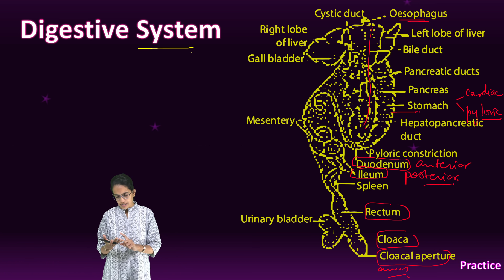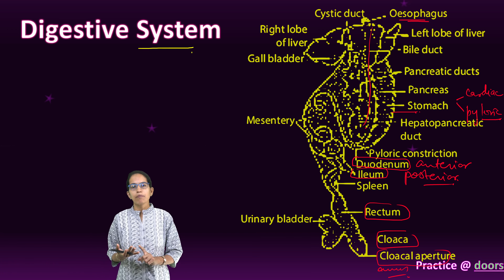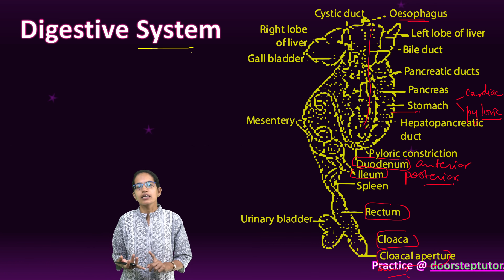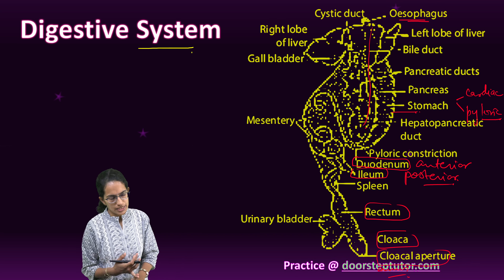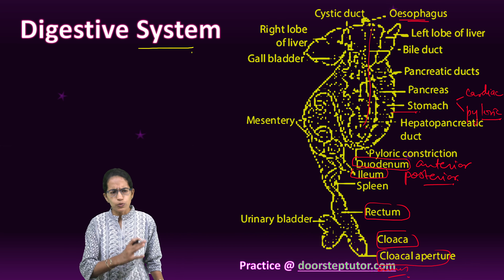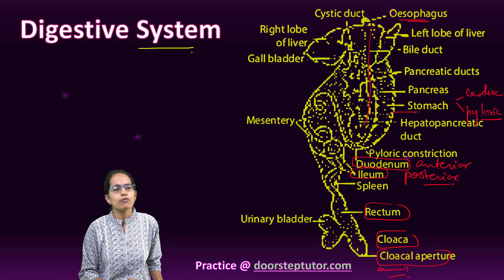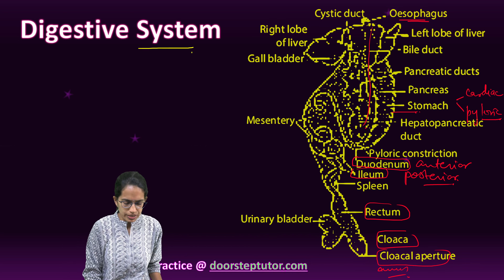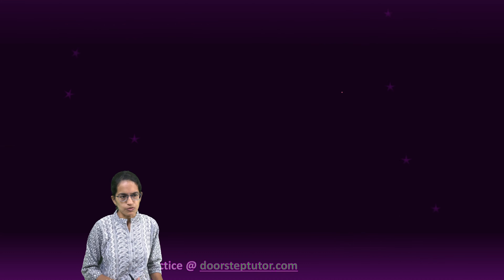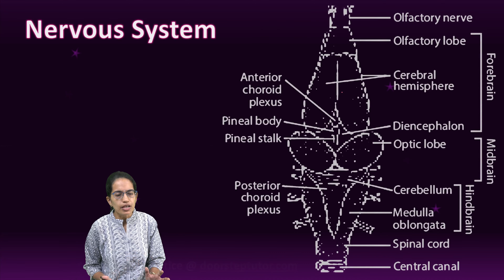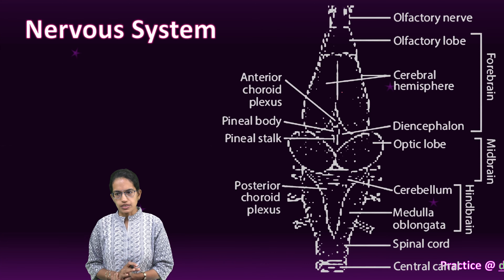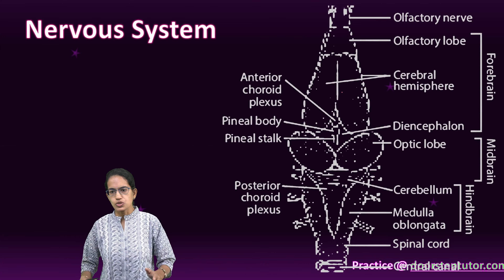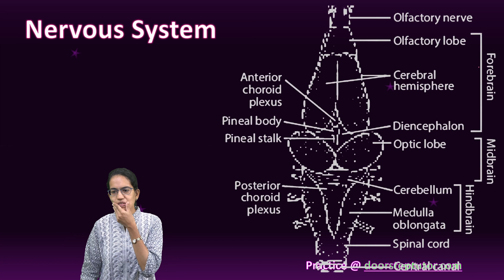There are various digestive glands which are present. The common glands are the liver, pancreas, gastric glands, and intestinal glands. That is a quick overview of the digestive system of the frog.